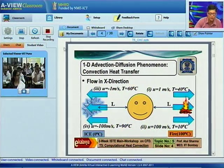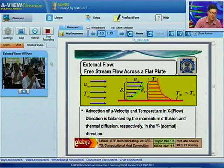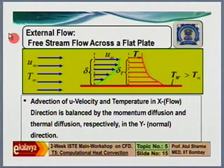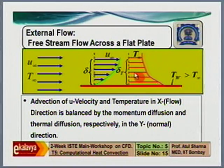From topic 5, slide 15: is there any relation between delta (velocity boundary layer thickness) and delta_T (thermal boundary layer thickness), or are they totally independent? Yes, there is a relationship, and it involves the non-dimensional Prandtl number. Prandtl number is defined as the ratio of kinematic viscosity divided by thermal diffusivity. When the Prandtl number is greater than one, the velocity boundary layer thickness is greater compared to the thermal boundary layer thickness, and vice versa.